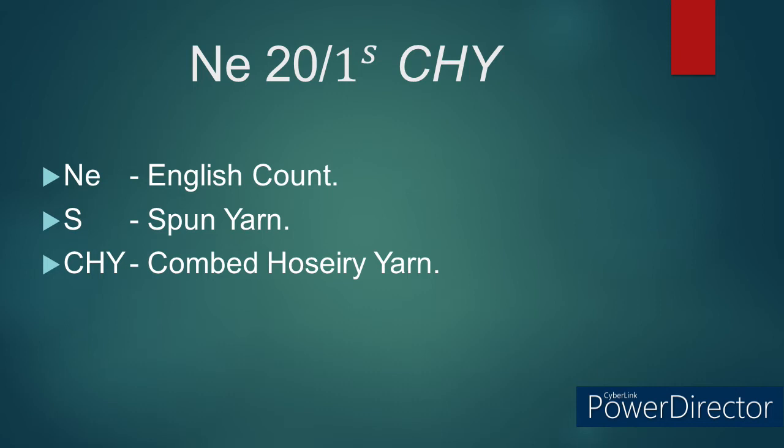/1 refers to single yarn. S refers to spun yarn. CHY refers to combed hosiery yarn, meaning this yarn has undergone the combing preparatory process during its yarn manufacturing, and the yarn specifications like twist per inch and yarn strength will be suitable for knitting. So it is called as combed hosiery yarn.